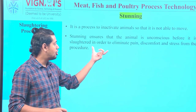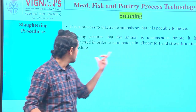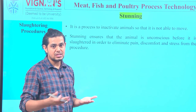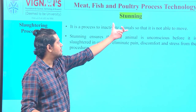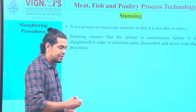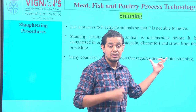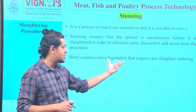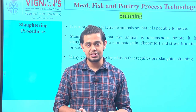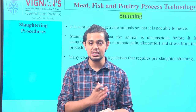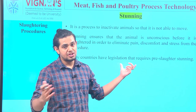Stunning ensures that the animal is unconscious before it is slaughtered, in order to eliminate any kind of pain, discomfort, and stress from the procedure. Many countries have legislation that requires pre-slaughter stunning — for example, the US and other developed countries have certain laws which ensure that the animal is subjected to the stunning protocol prior to the slaughtering procedure.